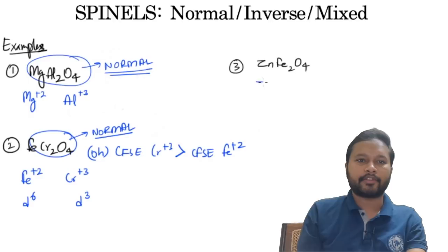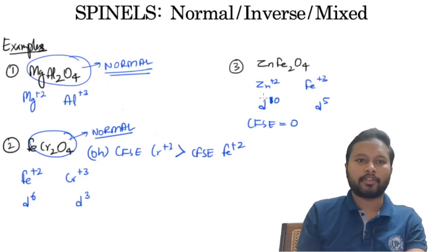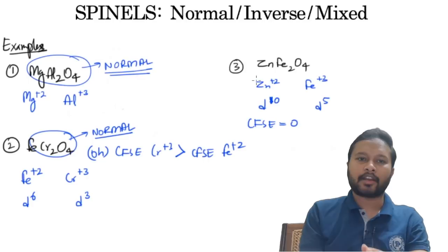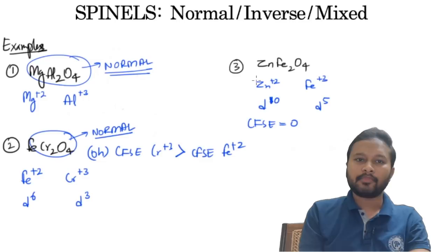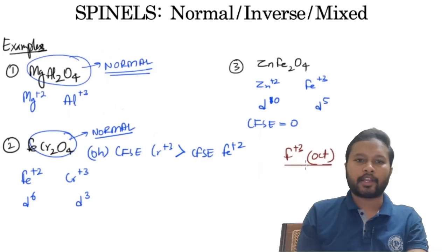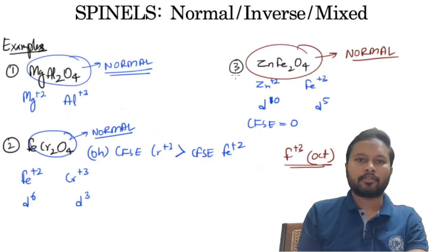For ZnFe₂O₄: Zn²⁺ is d10 and Fe³⁺ is d5, so CFSE is zero for both. The deciding factor here is size. Going left to right in a period, size decreases, so Zn²⁺ is smaller than Fe³⁺. The smaller Zn²⁺ goes into the smaller tetrahedral void, and Fe³⁺ (the tripositive cation) goes into the octahedral void — so this is a normal spinel.